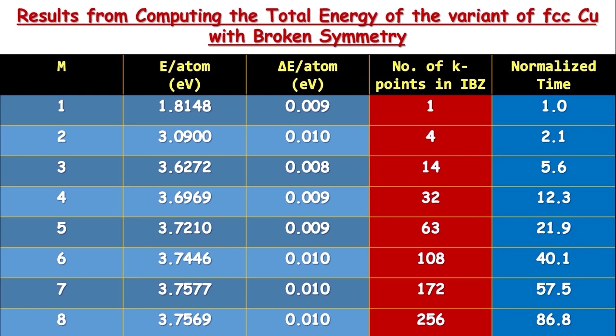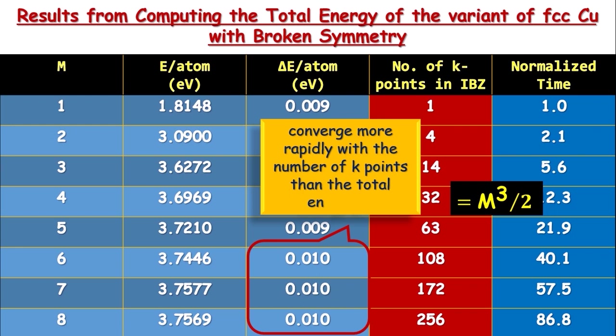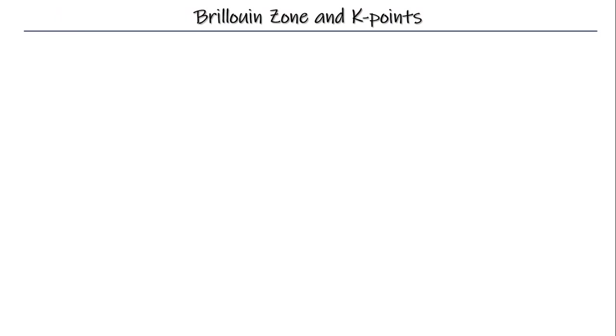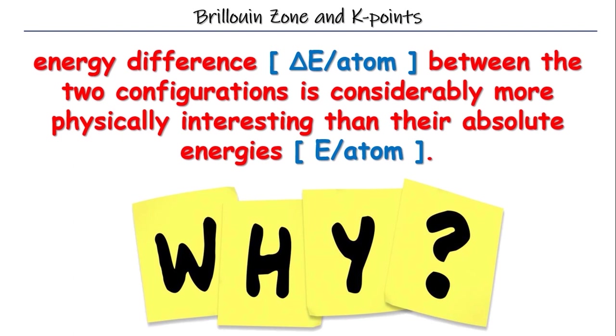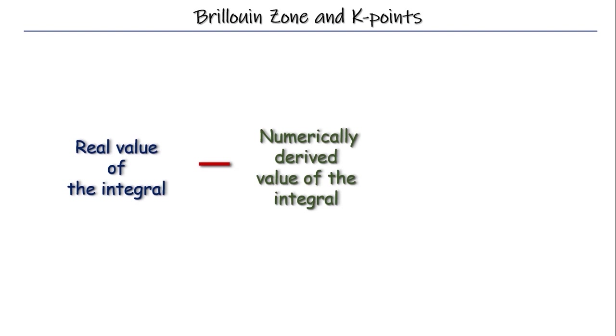Anyway, one thing is evident that delta E appears to converge here more rapidly with the number of K points than the total energy E. This is one thing really useful to us because energy difference between two configurations is more physically interesting than the absolute energies. Maybe you are thinking why? See, there is always some systematic difference between our numerically evaluated integrals for a particular atomic configuration and the true values of the same integrals.